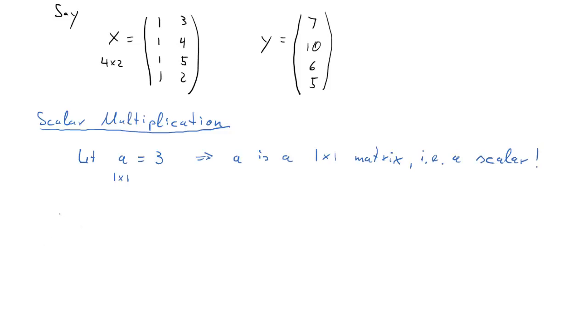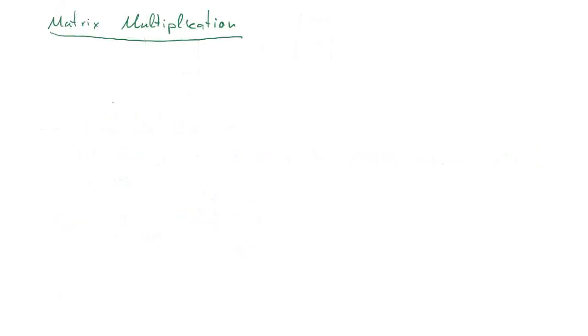What happens if we multiply a matrix with a scalar? For instance A times X. We'll keep track of the dimensions here. We just multiply each individual element of X with that scalar A which is 3 in our case. So this is the result. That's very straightforward.